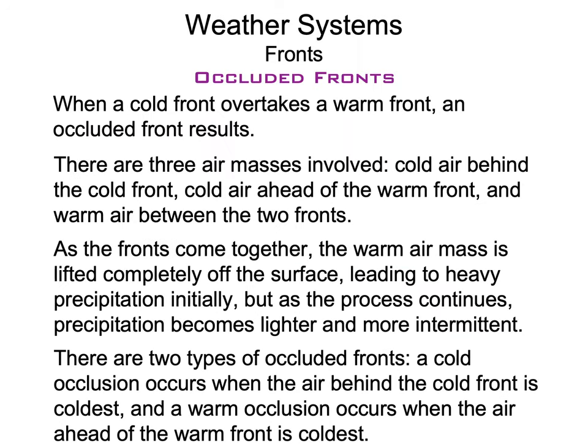Occluded fronts occur when a cold front overtakes a warm front — three air masses are involved: cold air behind the cold front, cold air ahead of the warm front, and the warm air mass between them. When the fronts come together, the warm air mass is bodily lifted off the surface. Initially that means heavy precipitation, but as the process continues the precipitation becomes lighter and more intermittent as most of the moisture is wrung out. There are two types — cold occlusion and warm occlusion — based on which cold air mass is colder. More recent research suggests cold occlusions are not very common.